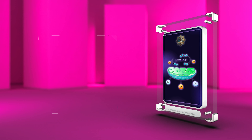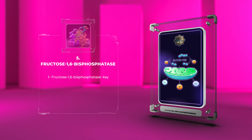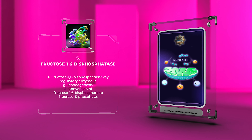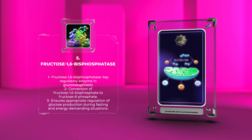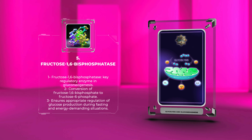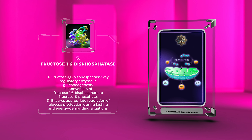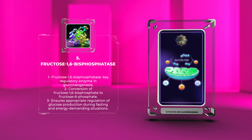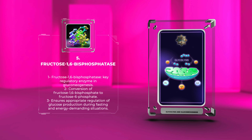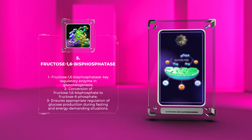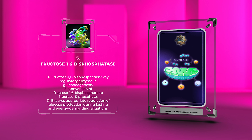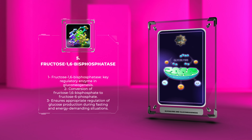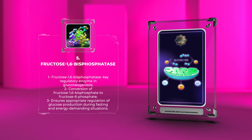Fructose 1,6-bisphosphatase is a key regulatory enzyme in gluconeogenesis. It catalyzes the conversion of fructose 1,6-bisphosphate to fructose 6-phosphate, allowing the reversal of the glycolytic pathway. This control point ensures the appropriate regulation of glucose production during fasting and other energy-demanding situations.